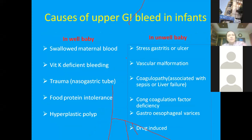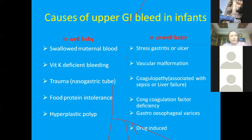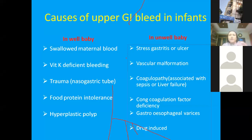The causes of upper GI bleeding in infants can be divided into well baby and unwell baby categories. In a well baby, causes include swallowed maternal blood and vitamin K deficiency bleeding — always ask whether the child received vitamin K at birth. In an unwell baby, causes include stress gastritis, vascular malformation, coagulopathy associated with sepsis or liver failure, congenital coagulation factor deficiency, gastroesophageal varices, and drug-induced causes — all of which can present with significant illness.